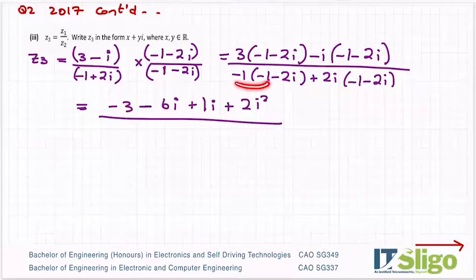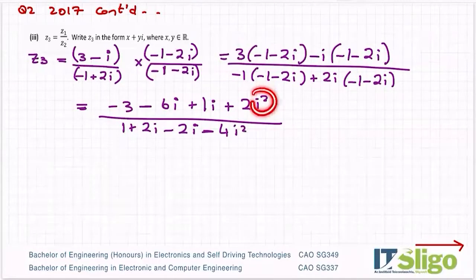Over minus one by minus one, so minus by minus is a plus, one by one is one. Minus one minus two i minus two i, so minus by minus is a plus again, two ones are two i, so plus two i. Now plus two i by minus one, so plus by minus is a minus, two ones are two. And the i, plus two i by minus two i, so plus by minus is a minus, two twos four, i by i is i squared.